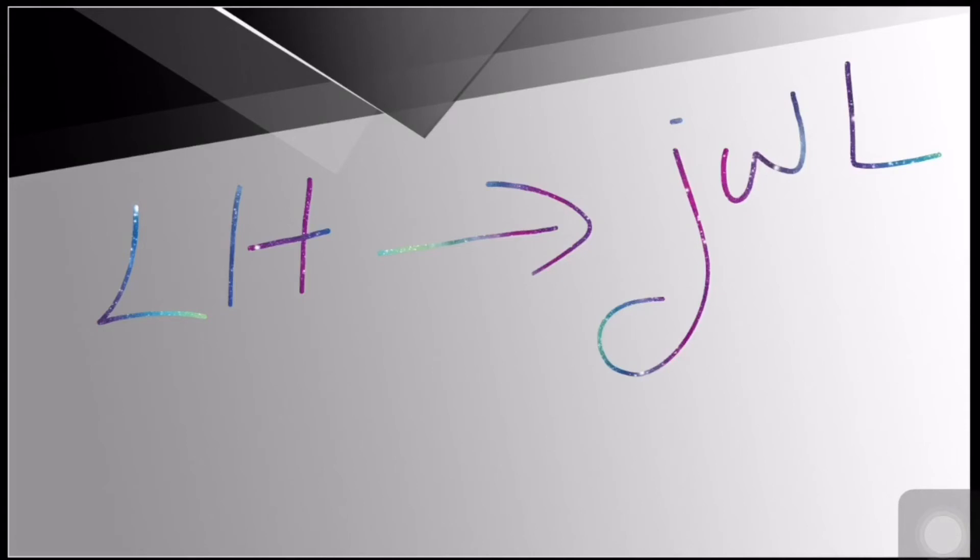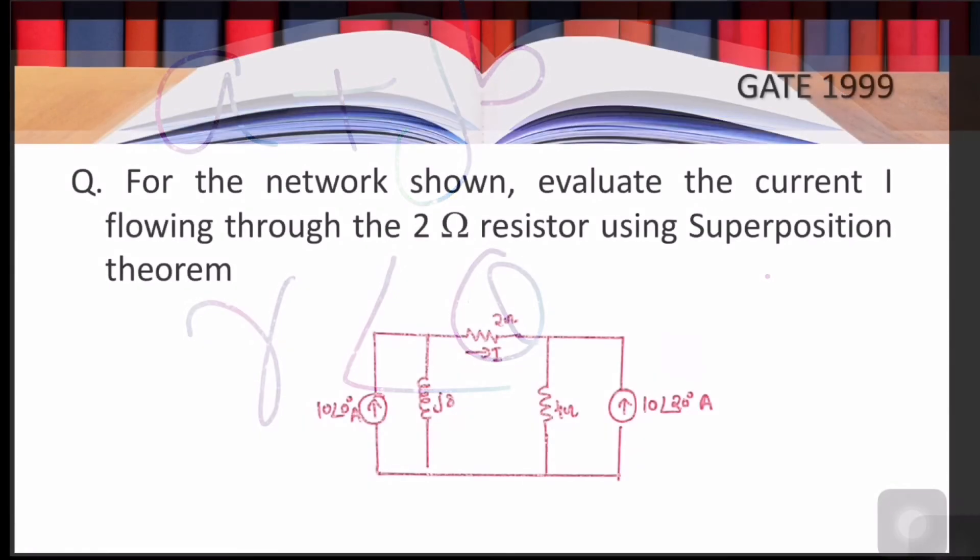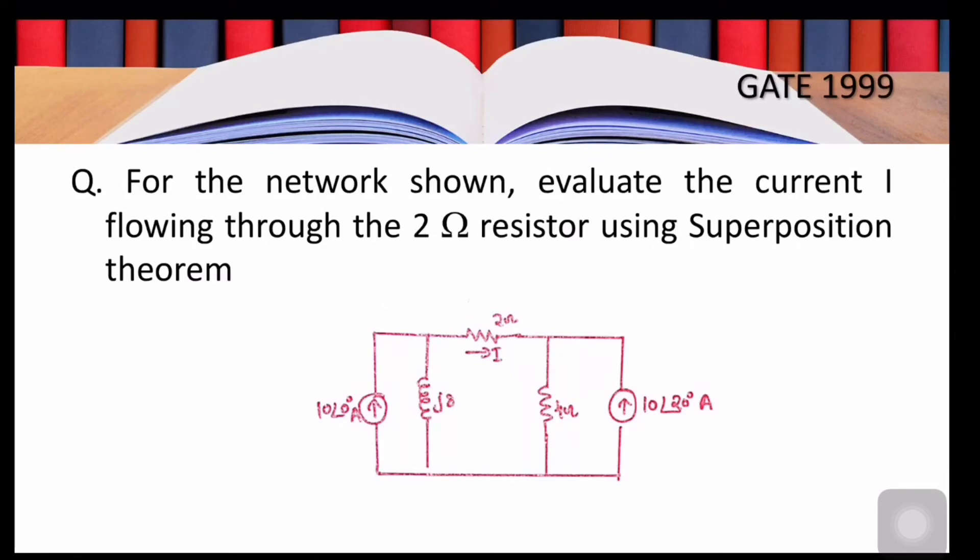Frequency domain analysis of networks is based on complex numbers. There are two forms to represent a complex number: rectangular form and polar form. In rectangular form, a complex number is written as a + jb, where a is the real part and b is the imaginary part. In polar form, it is written as r∠θ, where r is the magnitude and θ is the angle.